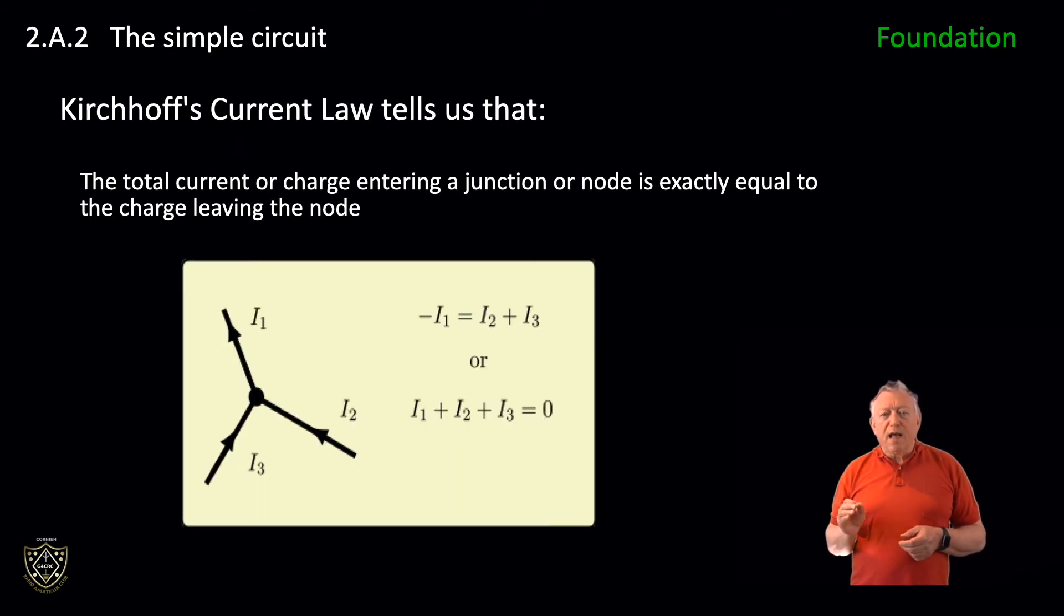Kirchhoff's current law tells us that the total current or charge entering a junction or node is exactly equal to the charge leaving that node, as it has no other place to go. Using a water analogy, the volume of water entering a full-up water tank equals the water leaving it. The graphic shows a node with two input currents, I2 and I3, and one exit current, I1. As one might expect, the magnitude of the exit current is equal to the sum of the input currents.